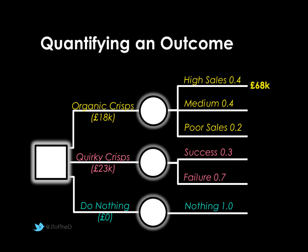To quantify, we look at what each outcome might mean financially. For organic crisps: high sales might mean £68,000 additional sales revenue; medium sales £41,000; and poor sales just an additional £17,000. For quirky crisps: success might be worth £72,000 to the business, which is quite significant. However, failure could actually mean a loss — perhaps £8,000 — damaging our existing reputation and losing sales of existing products. If we do nothing, the value of that will be zero.